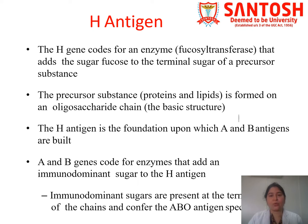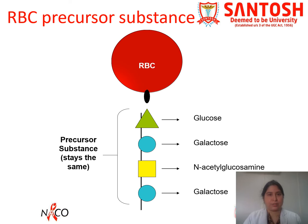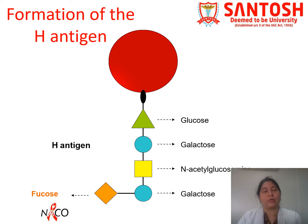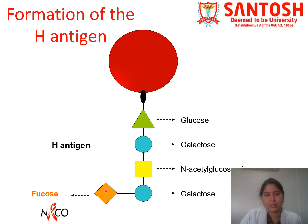A and B genes code for an enzyme that adds an immunodominant sugar to the H antigen. The immunodominant sugars present will be specific for A or B antigens. This pictogram shows the RBC precursor substance, which stays the same in all blood groups. The H gene transfers fucose with the help of fucosyltransferase, and once fucose is added to the precursor substance, it becomes the H antigen.